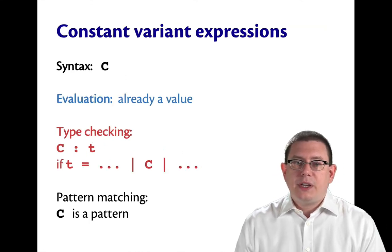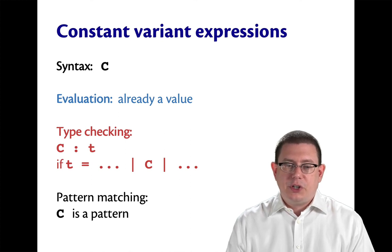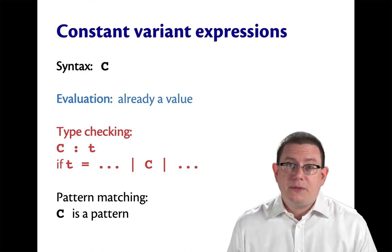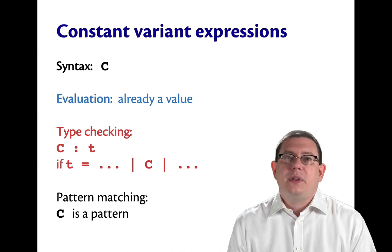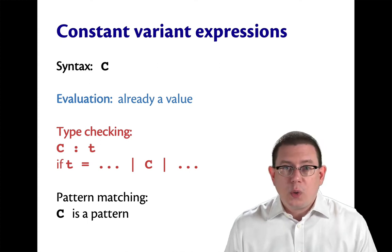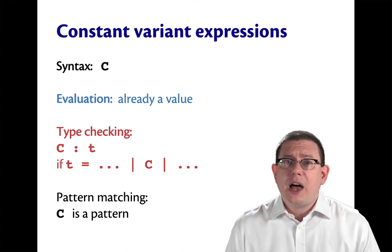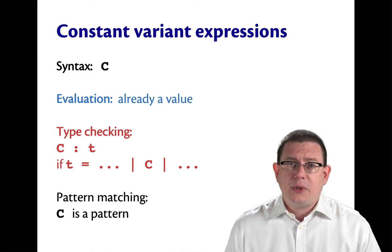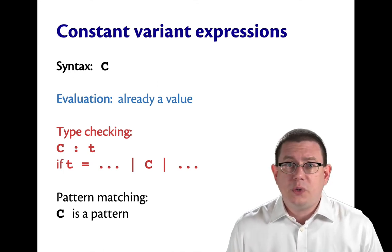Constant variant expressions are really just a simplification of everything we just saw. The syntax for a constant variant expression is just the constructor name. For evaluation, it's already a value. This is similar to how every other kind of constant in OCaml is already a value. Like 42 is already a value.